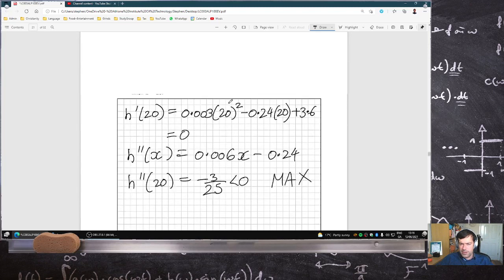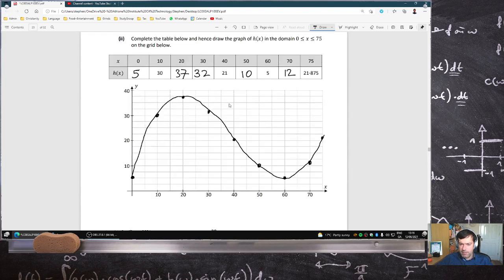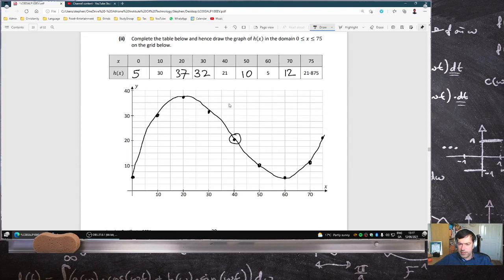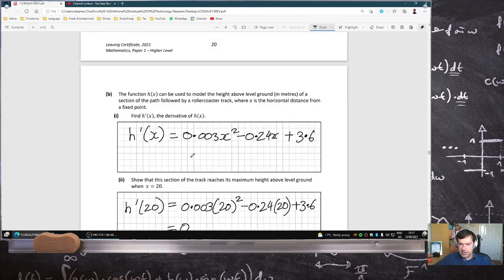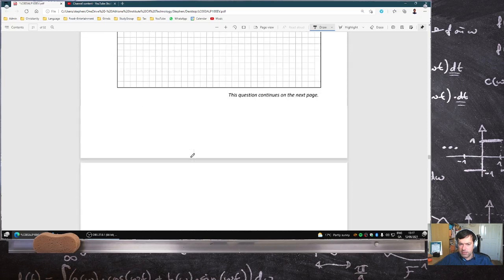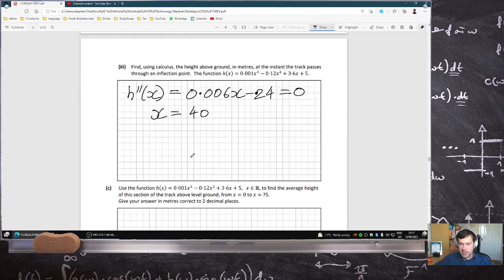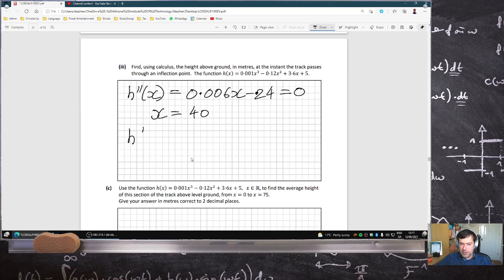So 40 is the inflection point. Let's just see if that's roughly right there. Yep, that does look like the inflection point. And the maximum does look like it happens at 20. So we're good. Now, technically speaking, to make sure it's an inflection point, we have to make sure that the first derivative at 40 isn't zero.